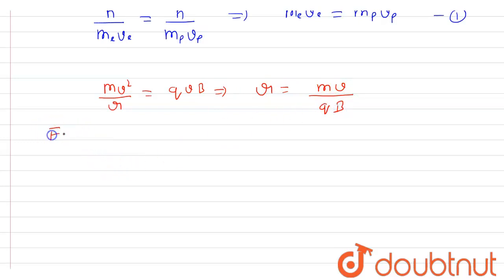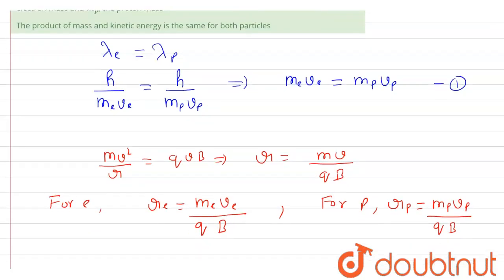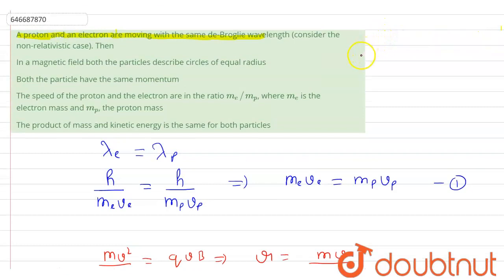For the electron, r_e = m_e × v_e / (q × B). The charge on the proton and electron is the same, so we use q, and if the same magnetic field is applied, B is also the same. Similarly for the proton, r_p = m_p × v_p / (q × B). Since q and B are constant, and from Equation 1 m_e·v_e = m_p·v_p, we can say r_e = r_p. So Option 1 is correct.